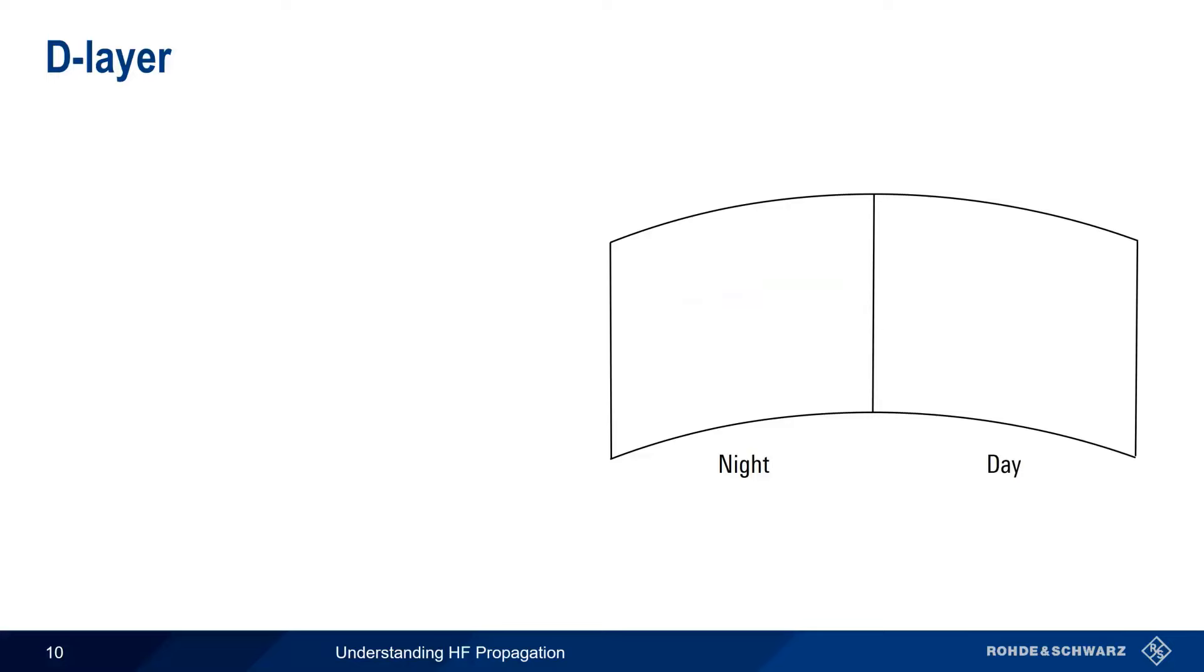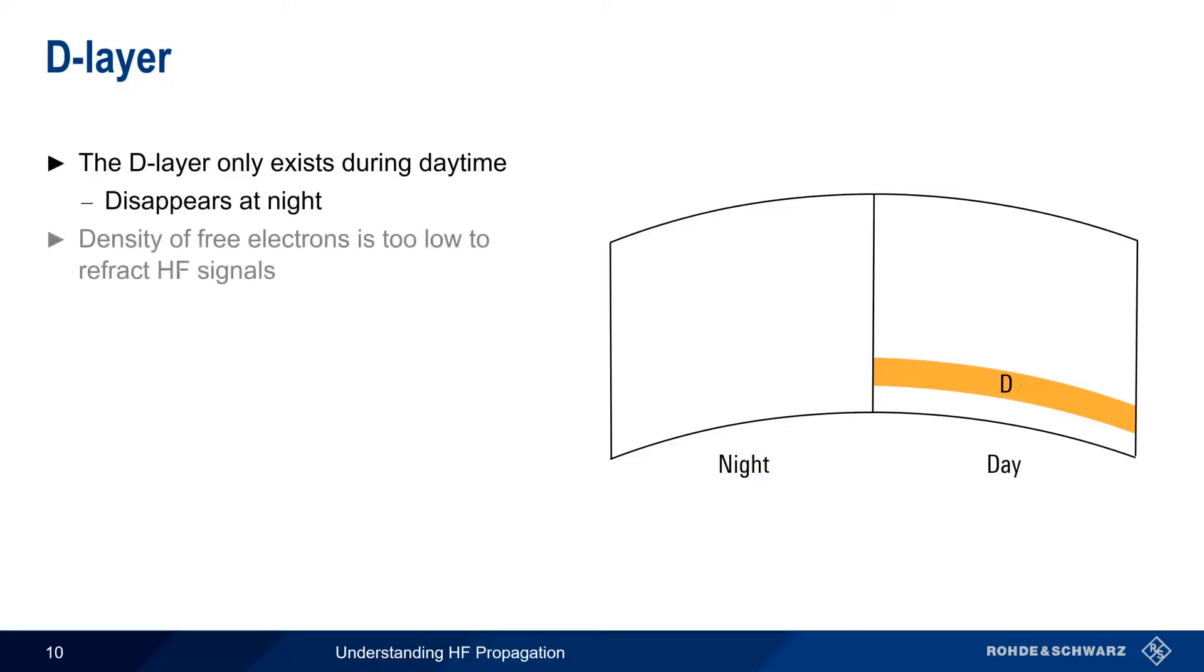Let's start with the lowest level of the ionosphere, the D layer. The D layer only exists during daytime hours, and disappears at night. Although the D layer is ionized by solar radiation, the density of free electrons in the D layer is too low to effectively refract HF signals, and therefore the D layer cannot be used for skywave propagation. Instead, the D layer acts as an absorber of HF signals.